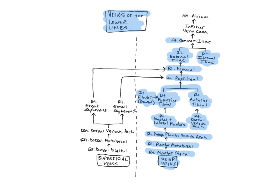The common iliac veins are deep veins formed by the union of the external and internal iliacs near the sacroiliac joints. The common iliacs then merge to form the inferior vena cava, beginning near the fifth lumbar vertebra, which then empties into the right atrium of the heart. The common iliacs drain the pelvis, external genitals, and lower limbs.